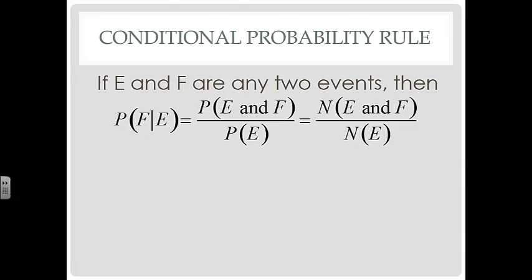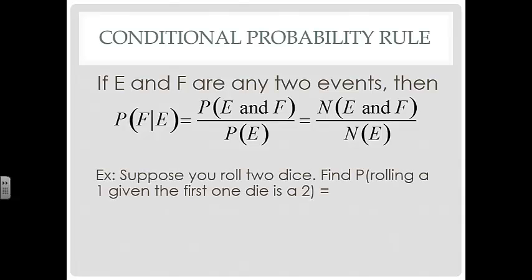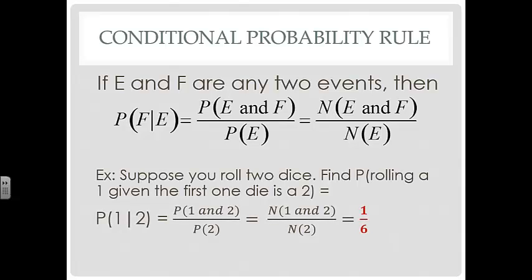For example, if you roll two dice, find the probability of rolling a 1 given that the first one is a 2. So we're looking at the probability of getting a 1 and a 2 out of the probability of getting a 2. If we already know that we have a 2, then the entire sample space includes the 2: a 2 and a 1, a 2 and a 2, a 2 and a 3, a 2 and a 4, a 2 and a 5, and a 2 and a 6. So the number of outcomes that have a 1 and a 2 is 1, and the number of outcomes that have a 2 is 6. So our probability is 1 out of 6.